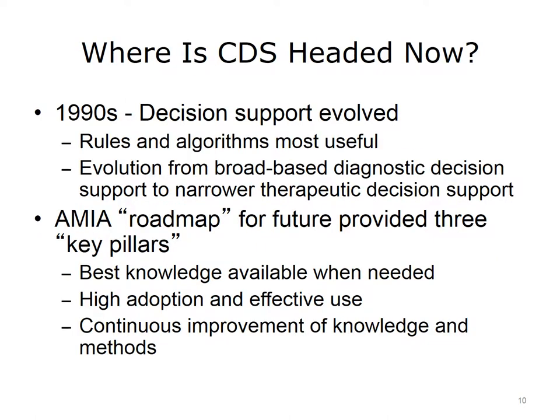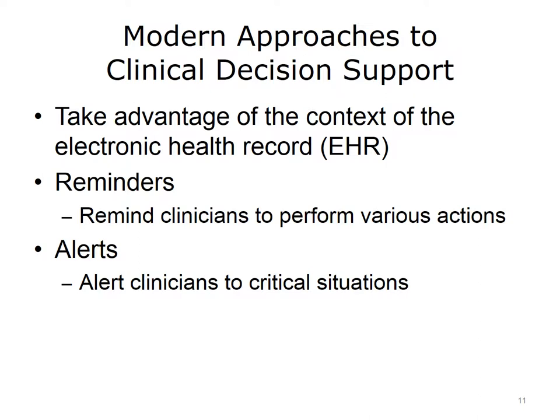Decision support evolved in the 1990s in tandem with the growing use of electronic health records. Rules and algorithms were actually found to be quite useful and are currently used in modern systems, though not in a diagnostic decision support way. There was an evolution from broad-based diagnostic decision support to more narrow, therapeutic decision support. A number of leaders in the field recently published a roadmap for decision support, with key pillars being having the best knowledge available when needed, ensuring high adoption and effective use, and continually improving knowledge and methods. The focus in this segment will be on reminders and alerts.